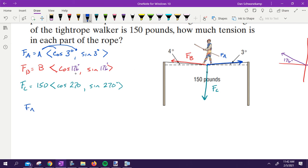So I'm going to go ahead and do that. So A cosine of three, comma, A sine of three, that's Force 1. Force 2, Force B, is going to be B cosine of 176, comma, B sine of 176.